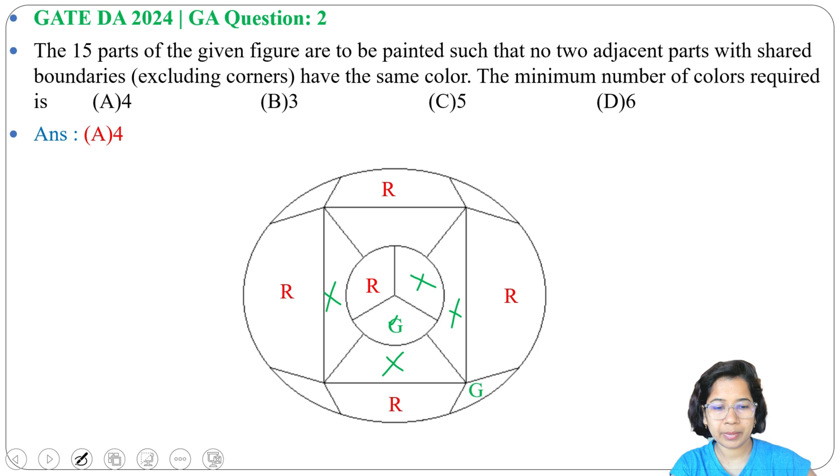So green can be in the 4 corners and the upper part. Next we assign blue color. Blue can be in this circle. After assigning here, blue cannot be here, so blue can be any one of these 2 parts. Let me assign blue here.